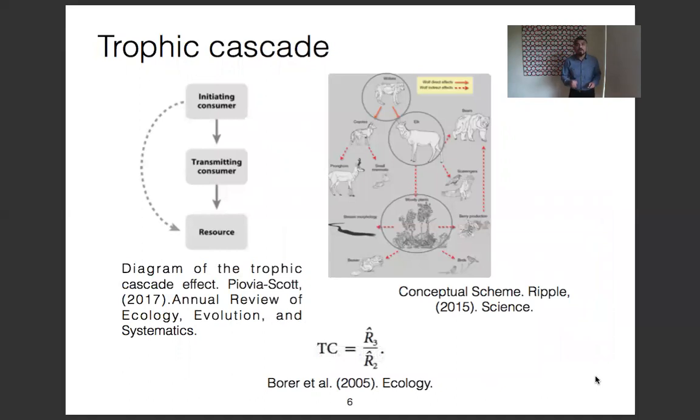Another phenomenon that can be observed in a trophic web is the trophic cascade. This refers to the indirect effect of the apex predator on the basal resource through the interaction with the intermediate species. The right side of the figure shows the effect of the wolf on the vegetation when preying on the elk. This notion can be described through an equation, in which the numerator is the equilibrium abundance of the basal resource with the presence of the wolf and elk, and the denominator is the equilibrium abundance of the basal resource calculated in absence of the wolf.